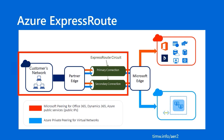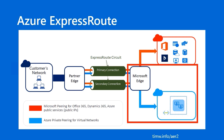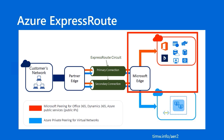Once you've got that ExpressRoute circuit into the Microsoft Edge, note that you can do a couple of different connections. The one most closely aligned with Site-to-Site VPN is a connection into a virtual network, which unlocks all sorts of management possibilities. But with ExpressRoute you can also create point-to-point high-speed connections to individual services like Microsoft 365, as well as platform services directly like Azure SQL Database, HD Insight, Databricks, and more.